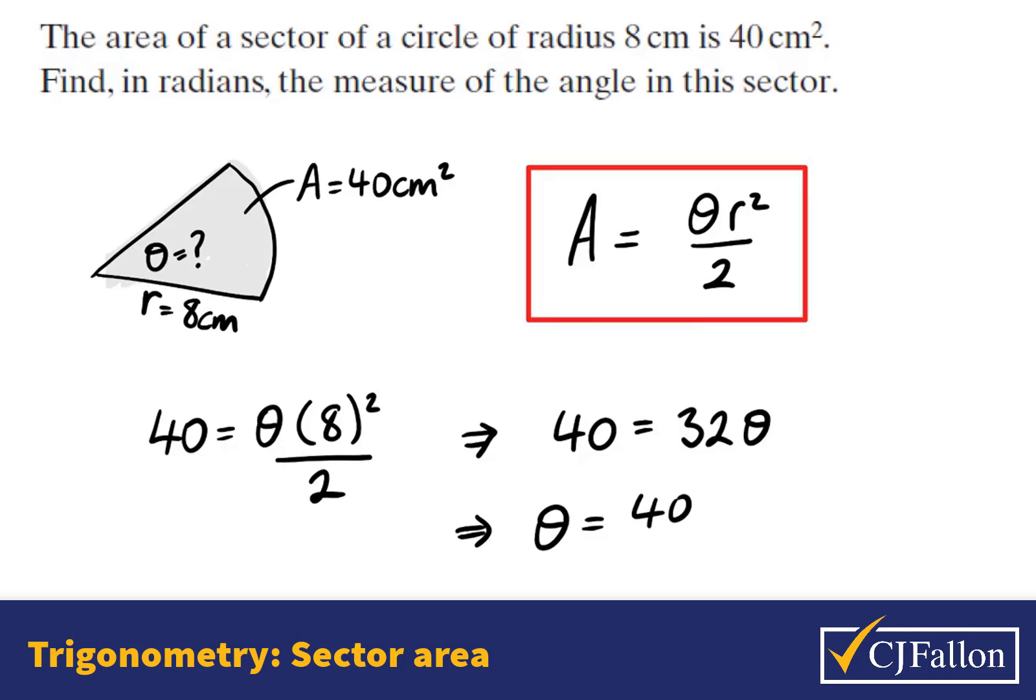Divide both sides by 32. So we see 40 divided by 32 is what theta equals. You might notice 8 divides into 40 five times and into 32 four times. So theta is 5/4 radians.